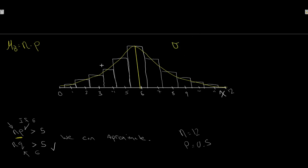The standard deviation of this approximating normal is the same as the standard deviation of the binomial, which is the square root of n times p times q — number of trials, probability of success, probability of failure. For our example: n times p is 6, times q of 0.5 gives 3. The square root of 3 is approximately 1.732. So our mean is 6 and our standard deviation is 1.732.